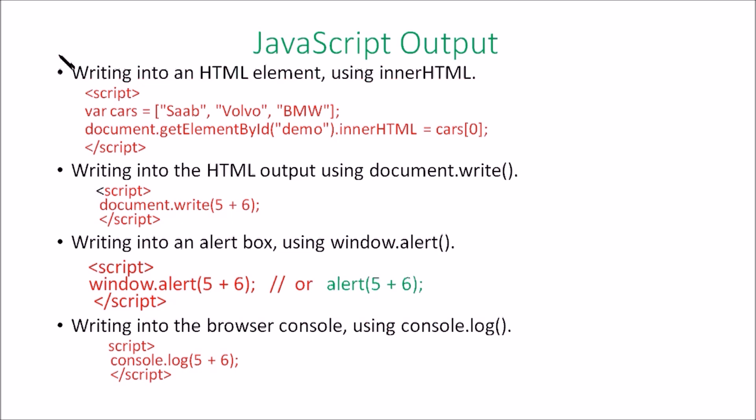That is, by using document.getElementById, document.getElementByClass, or document.getElementByName — these are some of the methods helpful to print output in JavaScript. Another method is document.write. When HTML is loaded by a browser we call it a document, and we can write output using the document.write function.